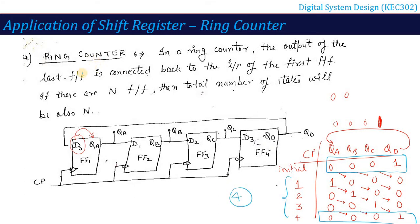If there are N flip-flops, the number of states equals N — meaning the circuit counts and repeats after N clock pulses. By connecting the last flip-flop's output to the first flip-flop's input, we can count the number of clock pulses until the circuit repeats its state. That is why we call it a ring counter.